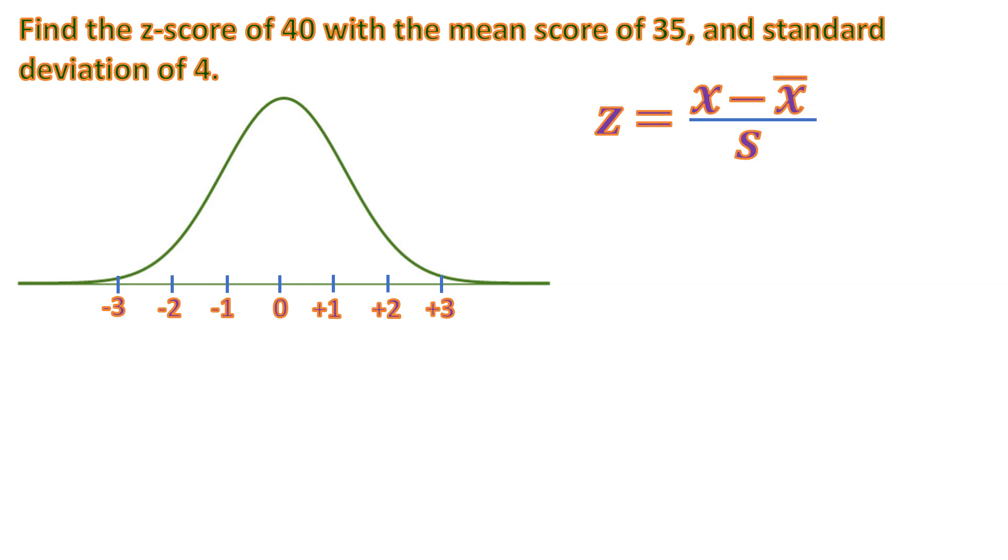So let's substitute. So our x is 40. That's the number that we want to know the standard score or the z-score. Minus the mean, which is 35, divided by 4. So 40 minus 35 is 5, divided by 4. So let's divide this. Z is now equal to 5 divided by 4 is 1.25.